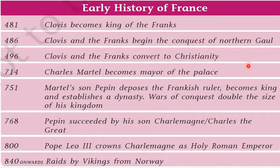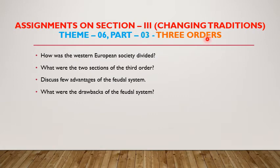This is a timeline of the early history of France. Assignments on Section 3, Changing Tradition, Theme 6, Part 3 are as follows. Number 1: How was the Western European society divided? The answer was discussed in the second section of our chapter — Western European society was divided into three orders: the first order comprising the clergy and the priestly class of the church; the second order comprising the nobility, important officials, and administrators of the king; and the third order comprising the peasants, basically divided into two groups — the free peasants and the serfs.